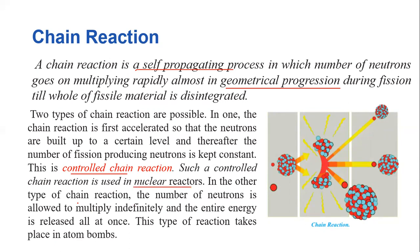In the other type of chain reaction, the number of neutrons is allowed to multiply indefinitely and the entire energy is released all at once. There is no control over the number of neutrons. This type of reaction takes place in an atom bomb. We can classify chain reactions into two types: one is called a controlled chain reaction and another is called an uncontrolled chain reaction.